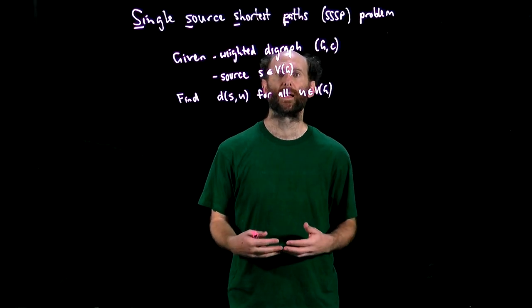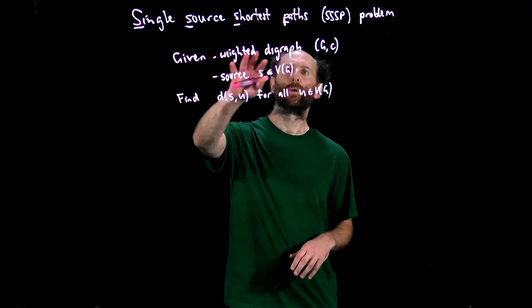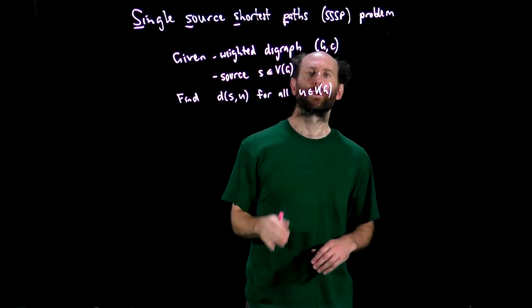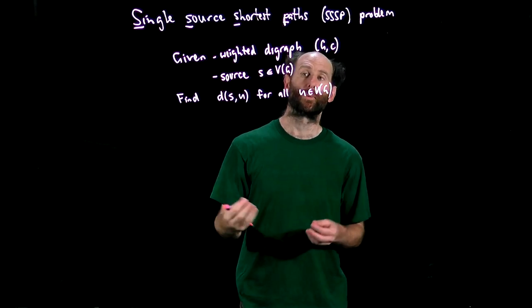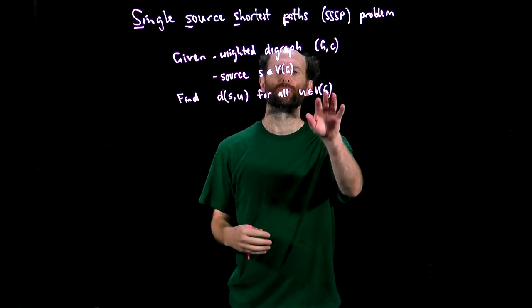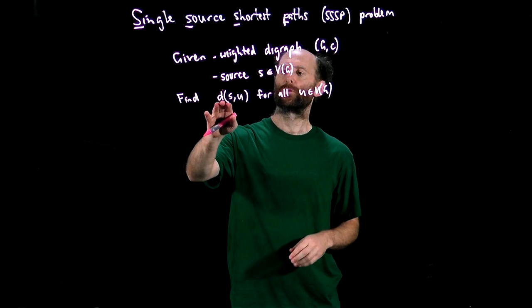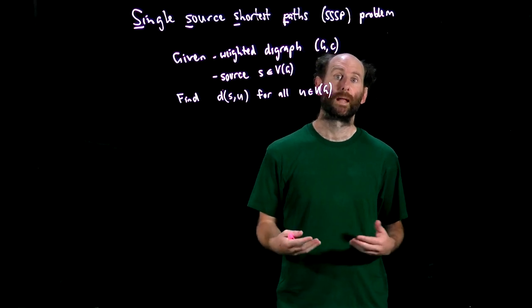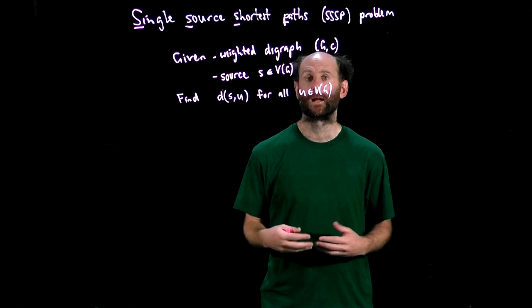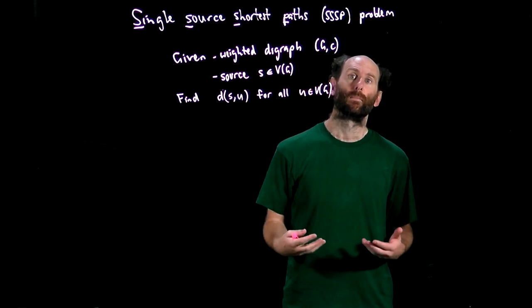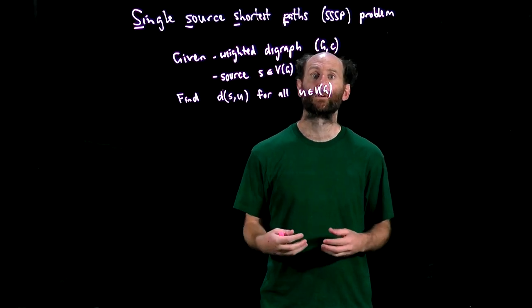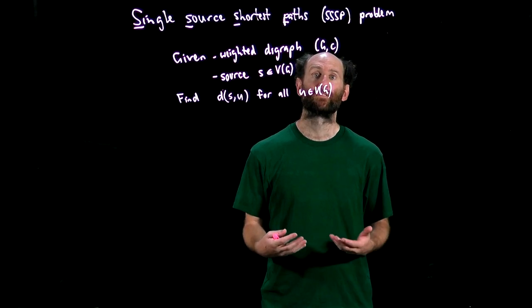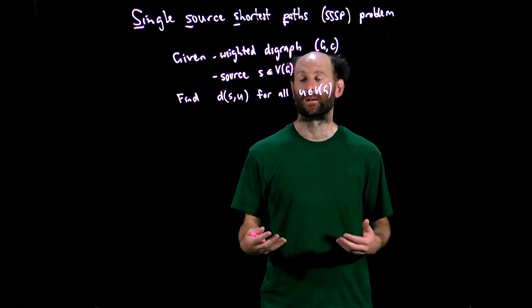So this is known as the single source shortest paths problem or SSSP. The single source shortest paths problem looks like this. We're given a weighted digraph G with cost matrix C, we're given a source S which is just one of the nodes in G and for each node U in G we need to find the shortest path from the source to U. So there's a nice algorithm that solves this known as Dijkstra's algorithm named after its inventor the influential Dutch computer scientist Edsger Dijkstra and it performs this task so long as there are no negative weights. If there are negative weights Dijkstra's algorithm may find the correct answer but it's not guaranteed to do so.